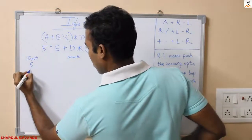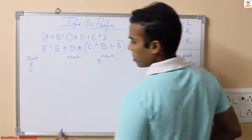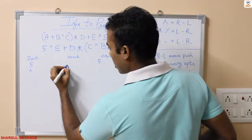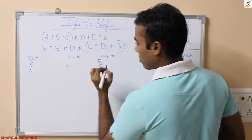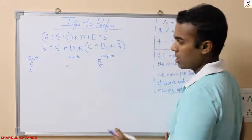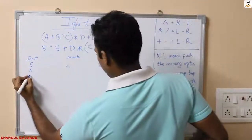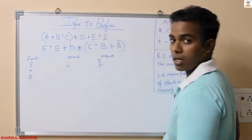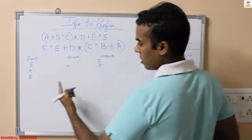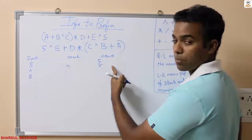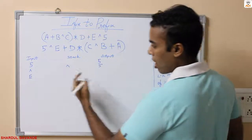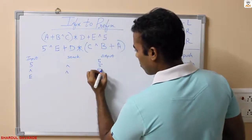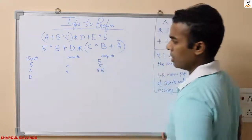Next I have power. Power is an operator, so add it to the stack. Output has 5 only. Next element is E. E is a character, so we will not add it to the stack — we will directly push it to the output. So in stack, power will remain the same, and in the output I will have 5 and E.